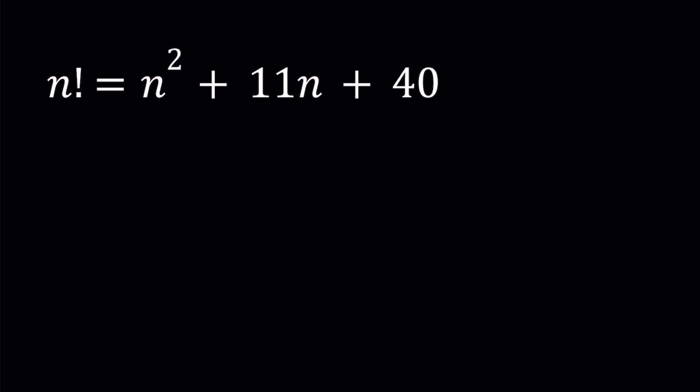Given that, we can safely say that n factorial, which equals n squared plus 11n plus 40, is greater than 40. And this means that if you think about the factorials, 3 factorial is 6, 4 factorial is 24, and 5 factorial is 120. That means n needs to be greater than 4. So let's go ahead and keep that in mind.